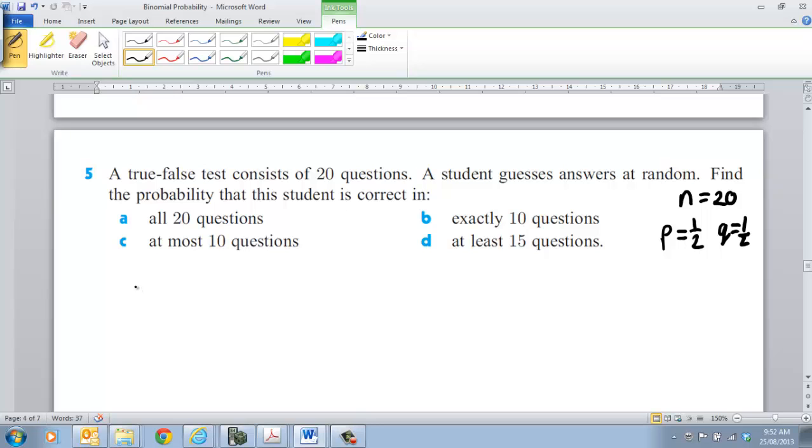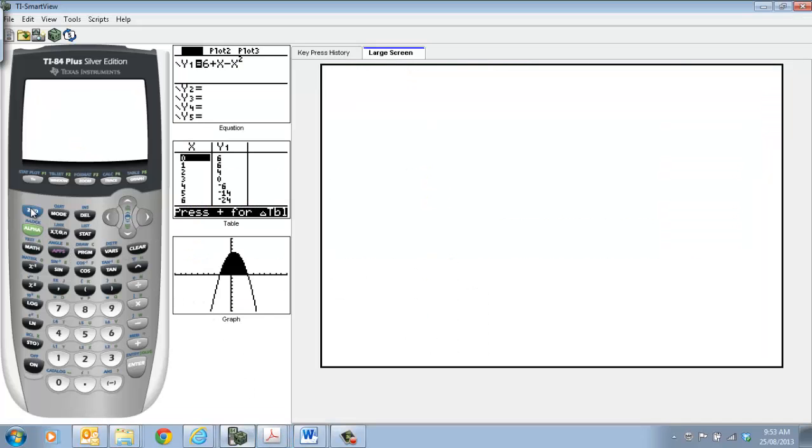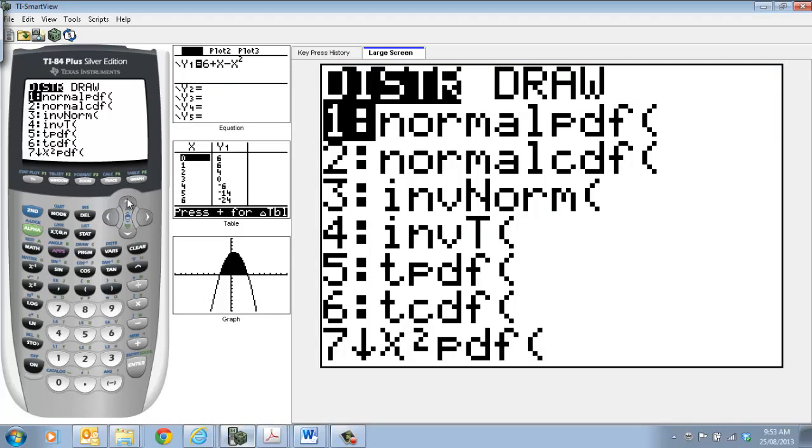Now you could do it the old-fashioned way, but I think it's better to use your calculator. So the setting out for number A is the probability that X, which is our variable, is equal to 20. Because it's a one-off result, then what we're looking at is using our binomial PDF. So then what we're going to be putting down there is the number it's out of, the likelihood of getting a successful result, and then the number that we're trying to get, which is our X value.